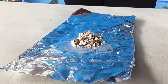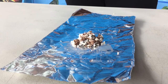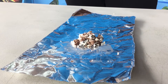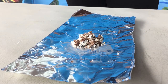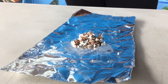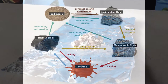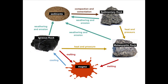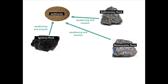Now that we have eroded our rocks, we now have our sediments. Sediments are broken down rocks. If you look at the rock cycle, weathering and erosion can happen to all the types of rocks, meaning our sediments can be made of sedimentary, metamorphic, and igneous rocks.